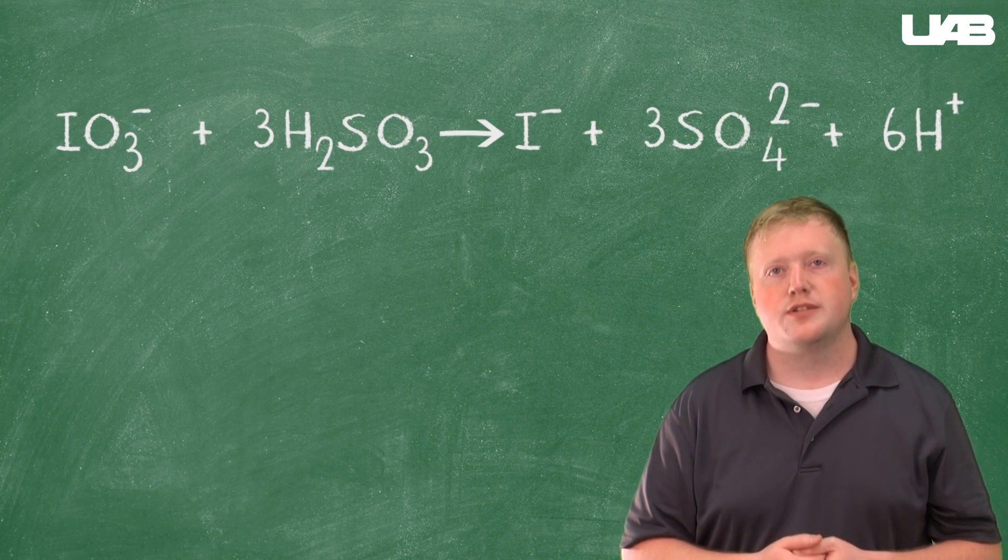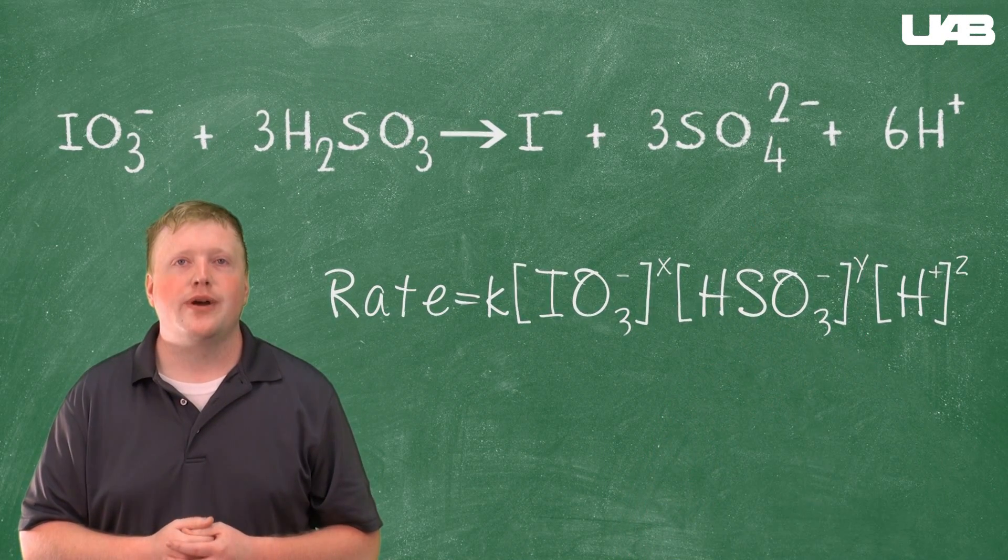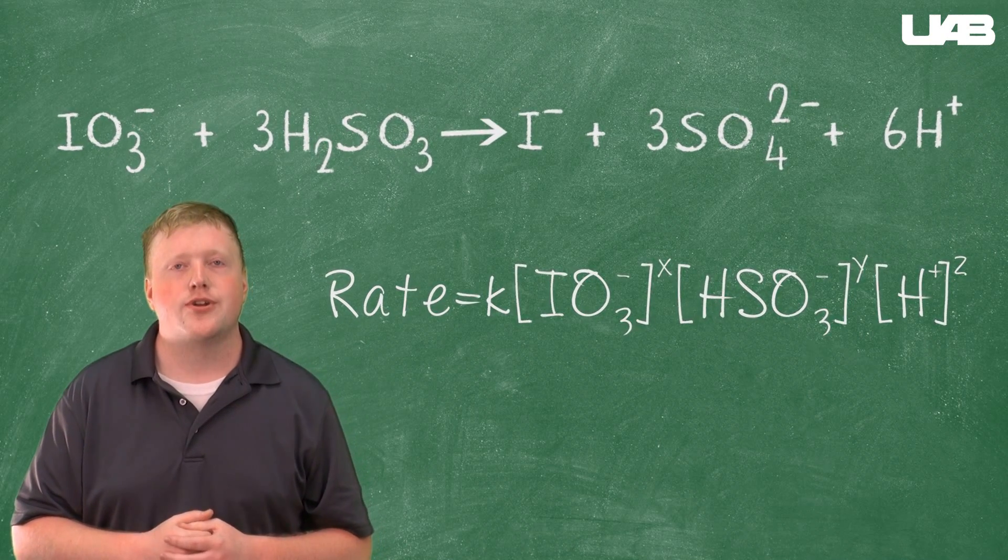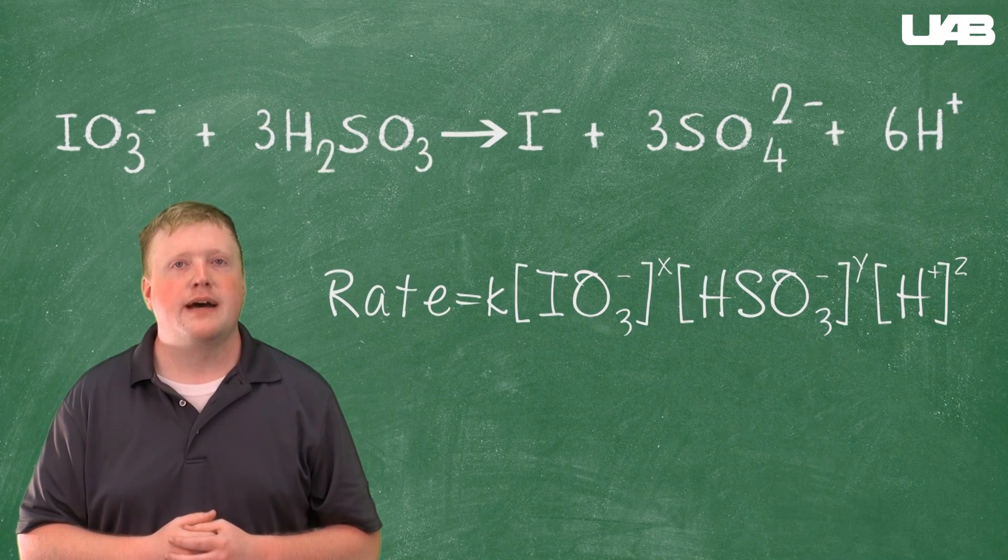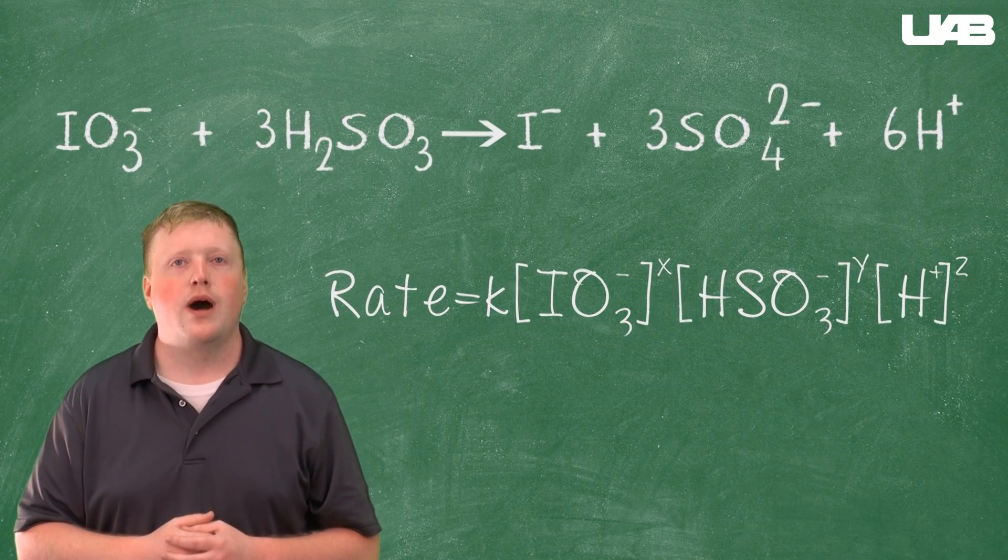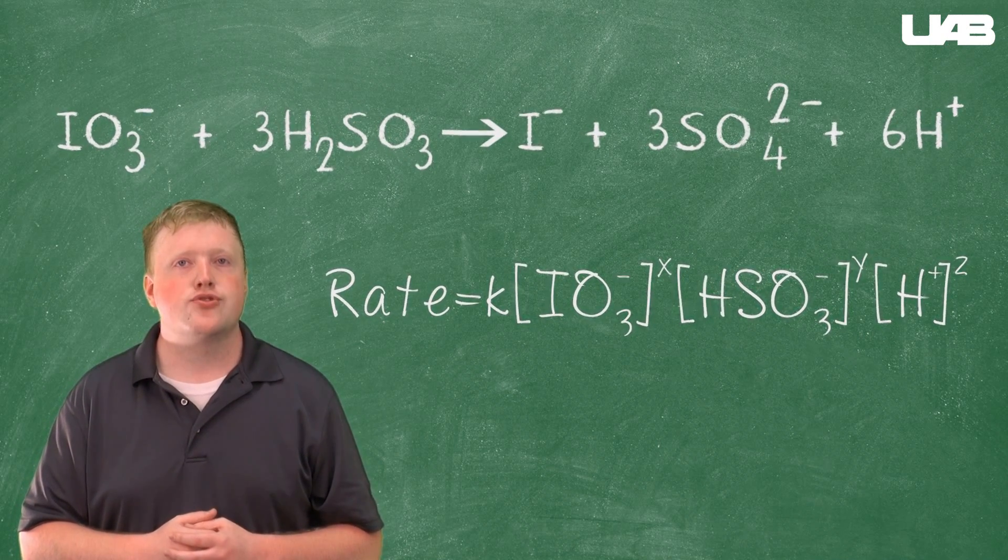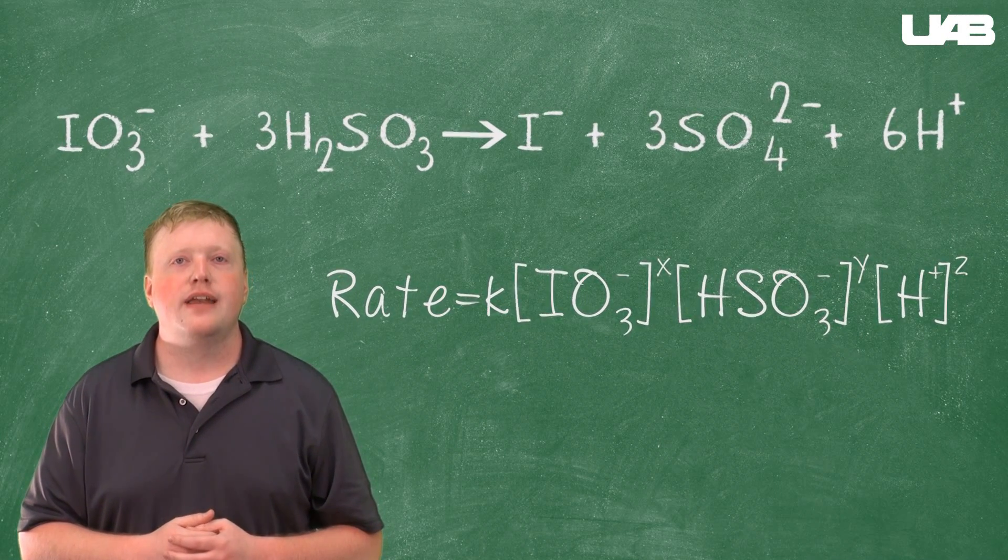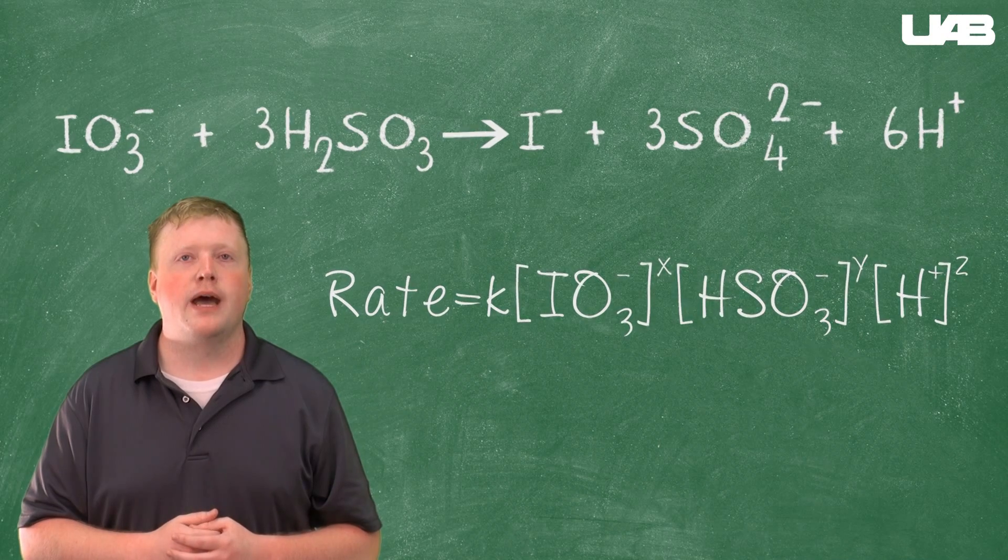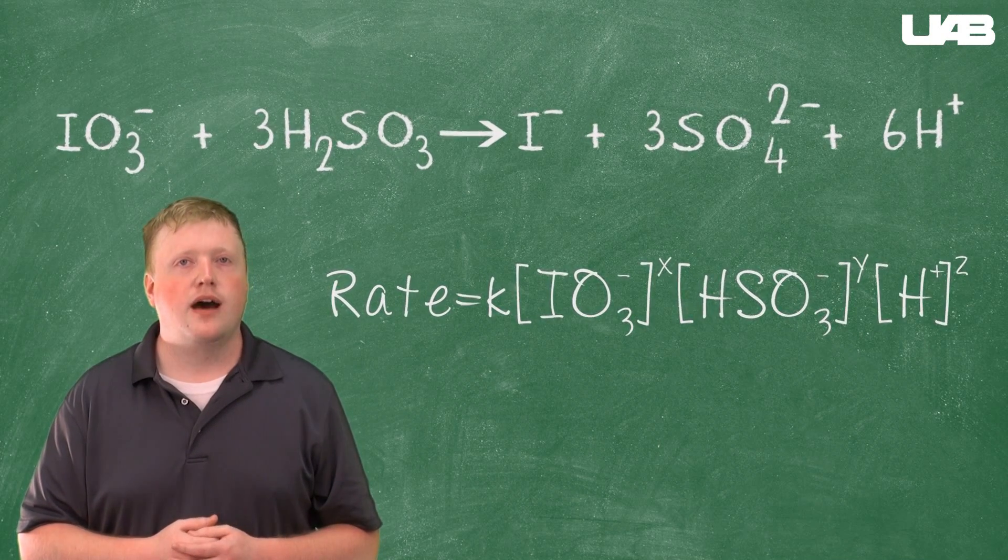We have to run our experiment. The general rate equation is rate equals K times the concentration of iodate raised to the x power times bisulfide raised to the y power times hydronium raised to the z power. We need to find out the values for all of the powers as well as the constant K.